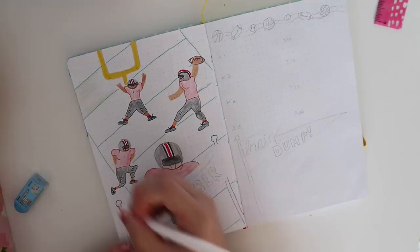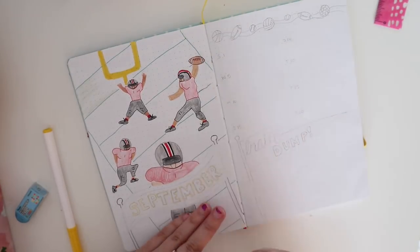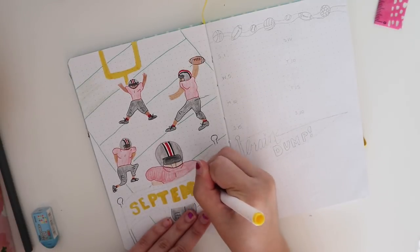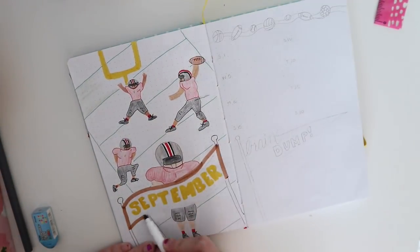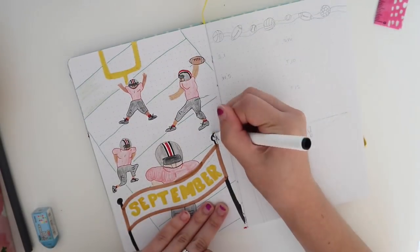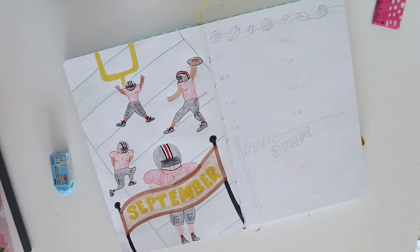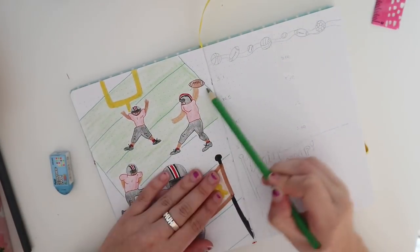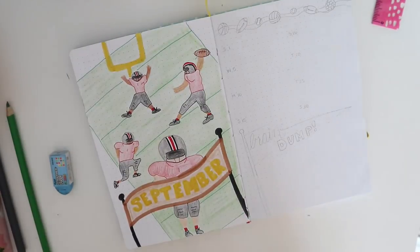As you can see I did start to decorate the helmets and their jerseys and their outfits in general as OSU football players and have them kind of playing some football or standing around on a football field with a nice big banner that says September on the front. I did want to finish up this spread with just a nice thick yellow border just to tie in those empty white spaces on the corners.